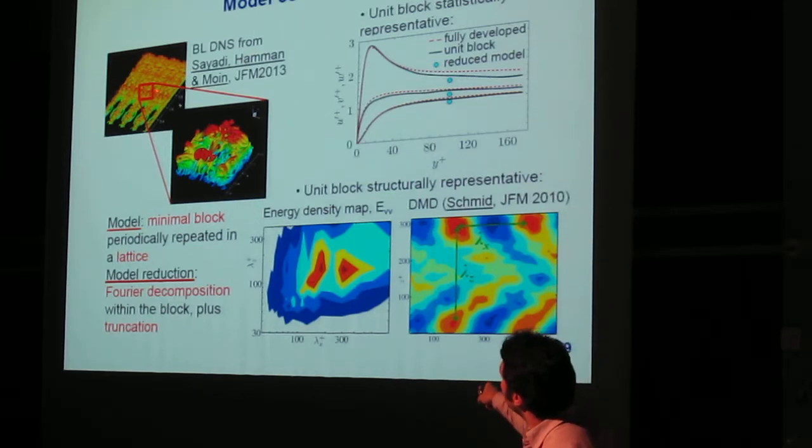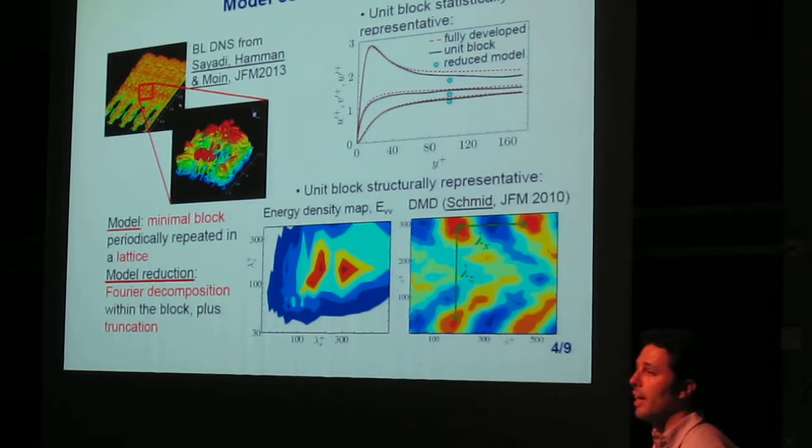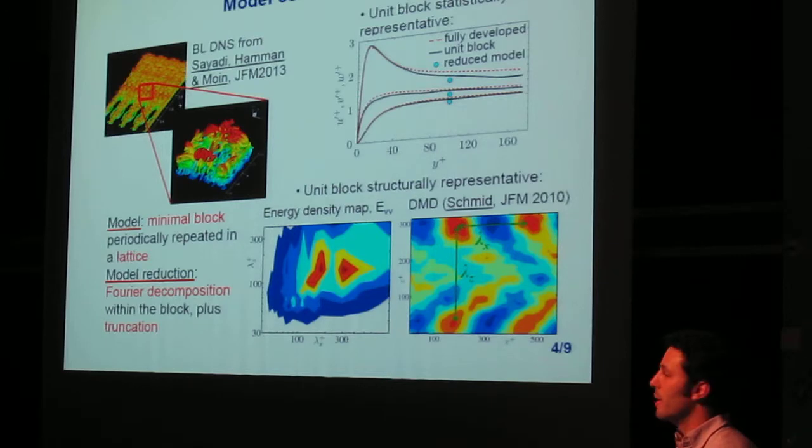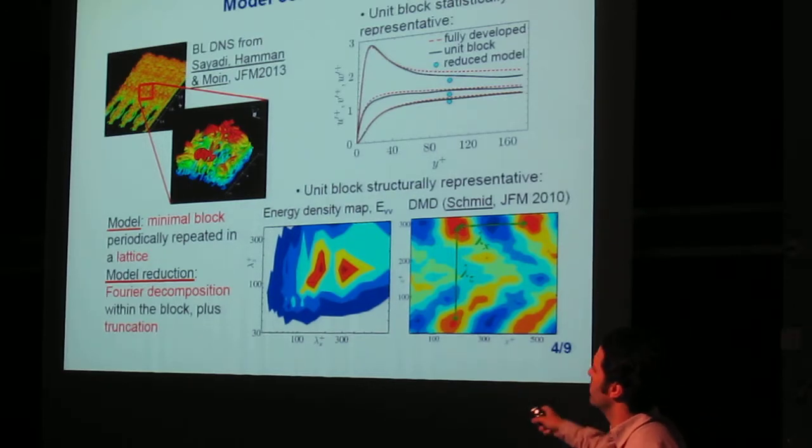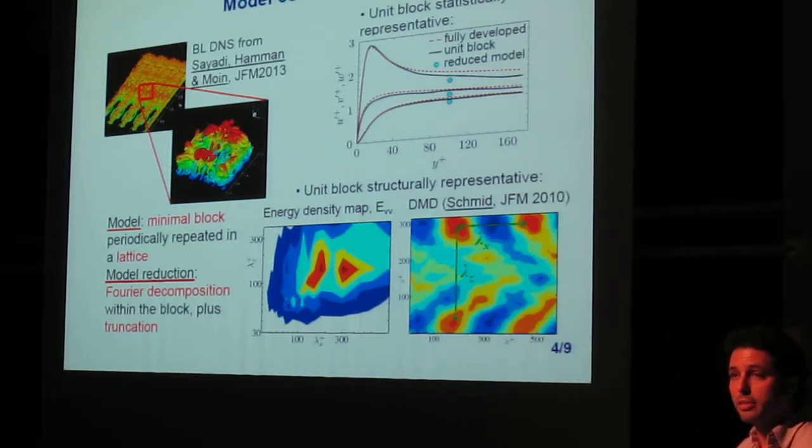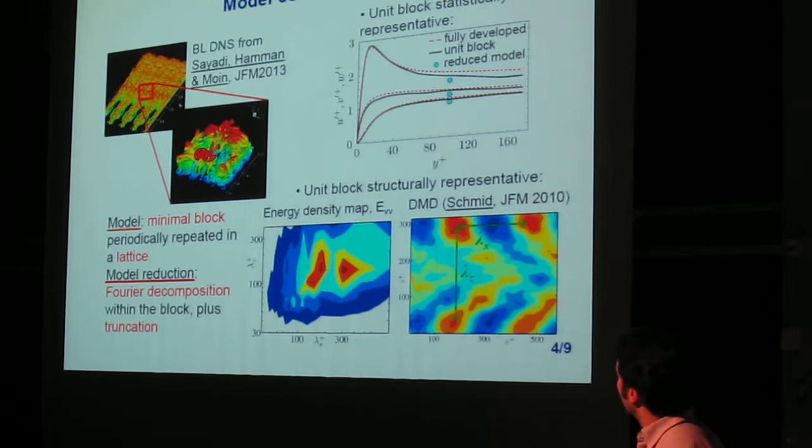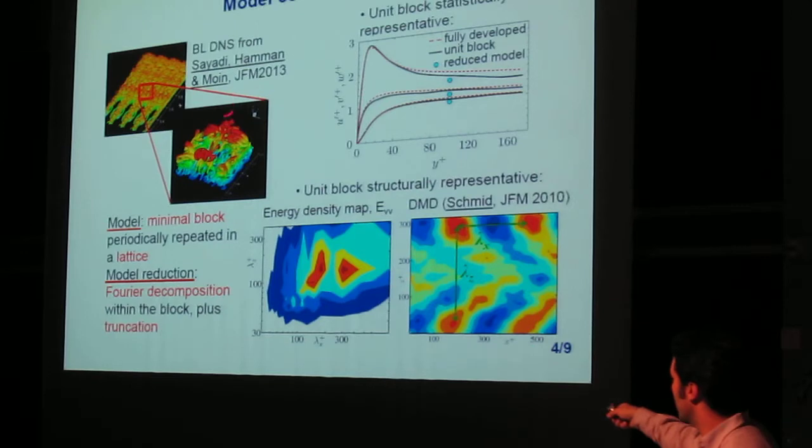So the idea is to grab some region of the flow there and do a parametric study on the size of that region, so it would serve as a minimal unit. And for that, we used several criteria, namely checking that the statistics of the flow restricted to that region would resemble those of fully developed flow at that Reynolds number.